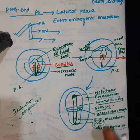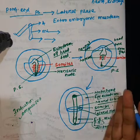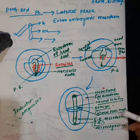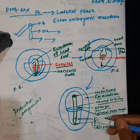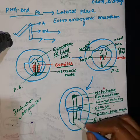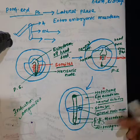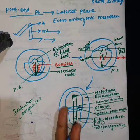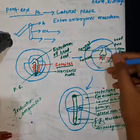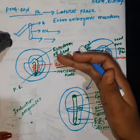During primitive streak elongation, the different parts being formed include the epidermal ectoderm, neural ectoderm, somites, somite mesoderm, lateral plate mesoderm, extra-embryonic mesoderm, and eventually the regression of the primitive streak itself. The primitive streak elongates towards the center of the embryo.